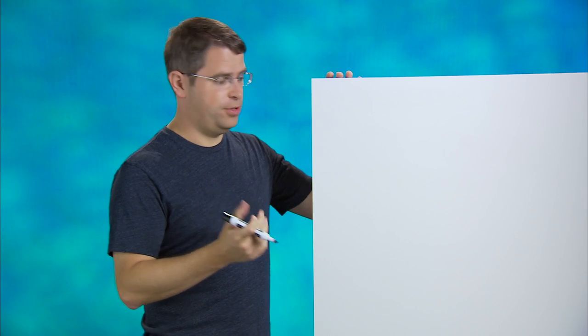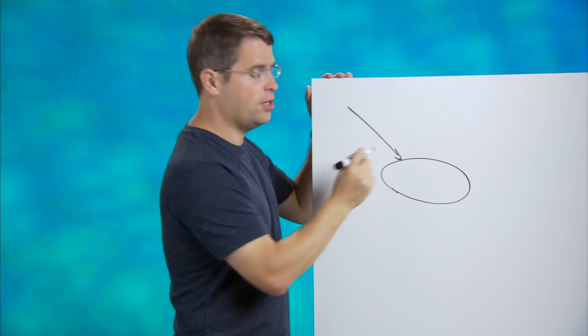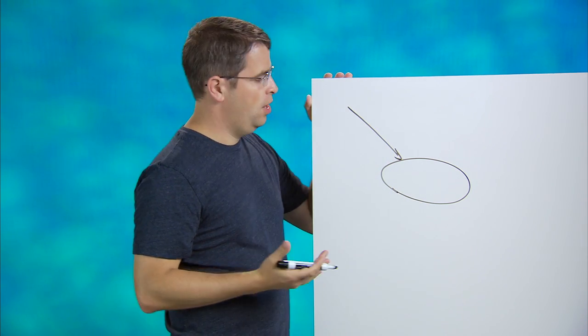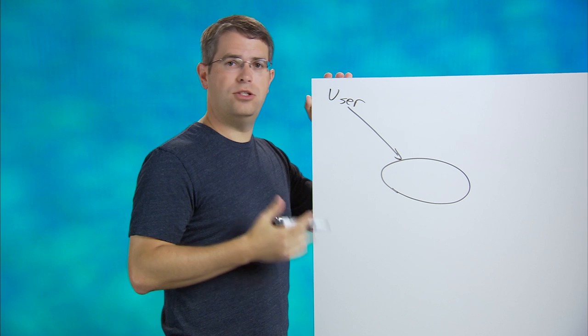So first off, what is cloaking? Cloaking is essentially showing different content to users than to Googlebot. So imagine that you have a web server right here. And a user comes and asks for a page. So here's your user. You give him some sort of page. Everybody's happy.